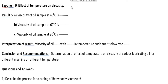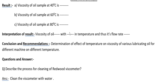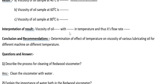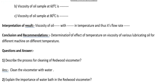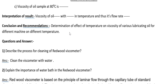Experiment number 9 is the effect of temperature on viscosity. In the result, you have to write the viscosity of the oil sample at 40°C, 60°C, and 80°C. In the interpretation of results, state whether viscosity of the oil increases or decreases with increase or decrease in temperature.